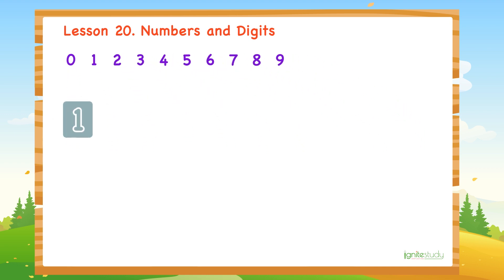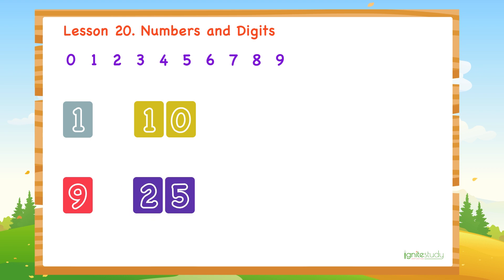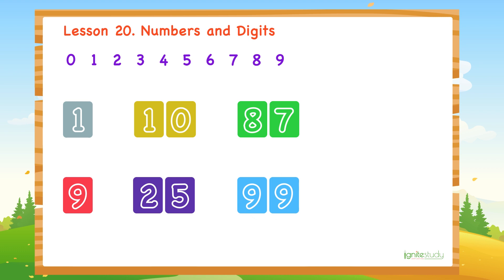To form number 1, we use number symbol 1. To form number 9, we use number symbol 9. To form number 10, we use number symbols 1 and 0. To form number 25, we use number symbols 2 and 5. To form number 87, we use number symbols 8 and 7. To form number 99, we use number symbol 9 and number symbol 9 again.